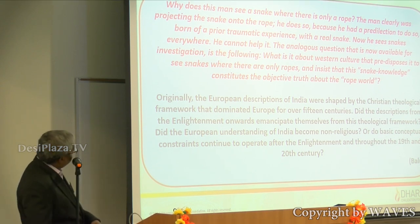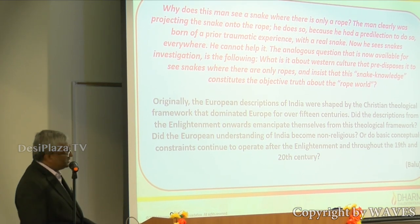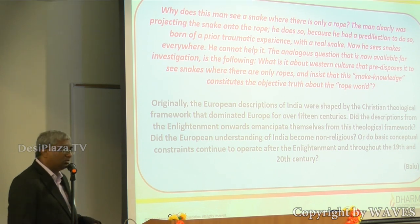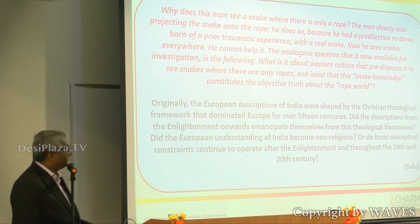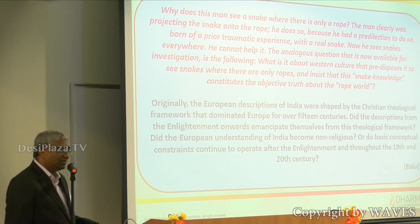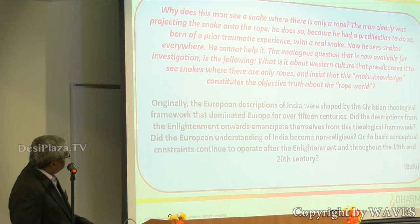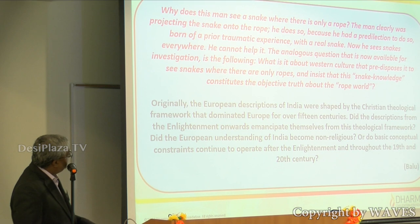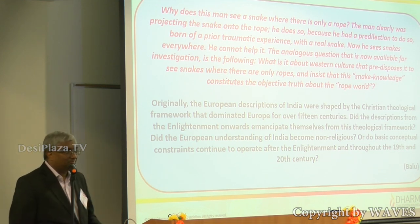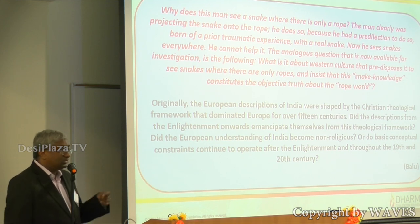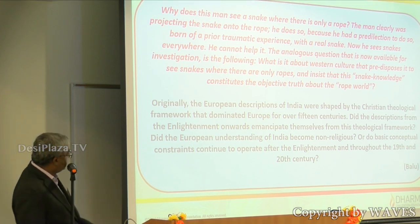The paradigm has a second premise. Why does this man see a snake where there is only a rope? He was clearly projecting the snake onto the rope — the snake existed only in his imagination. He does so because he had a predilection, a tendency to do so, born of a prior traumatic experience with a snake — and now he sees snakes everywhere. The analogous research question is: what is it about Western culture that predisposes it to see snakes where there are only ropes, and insist that this snake-knowledge constitutes objective truth about the rope world?